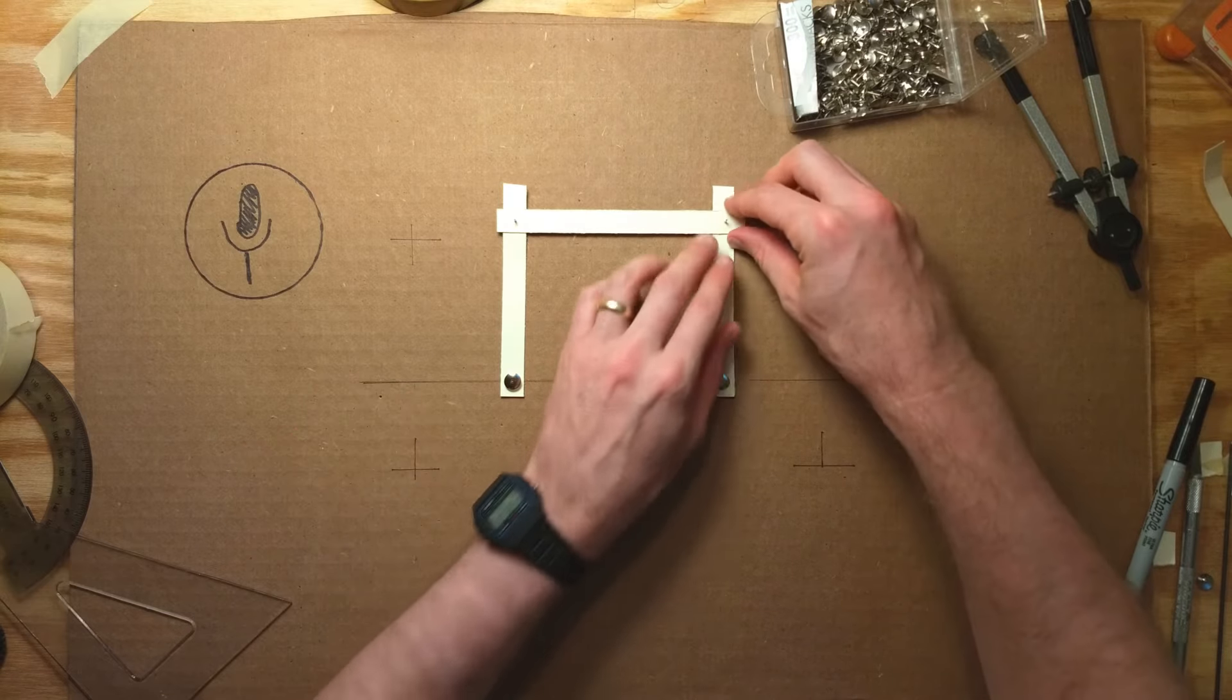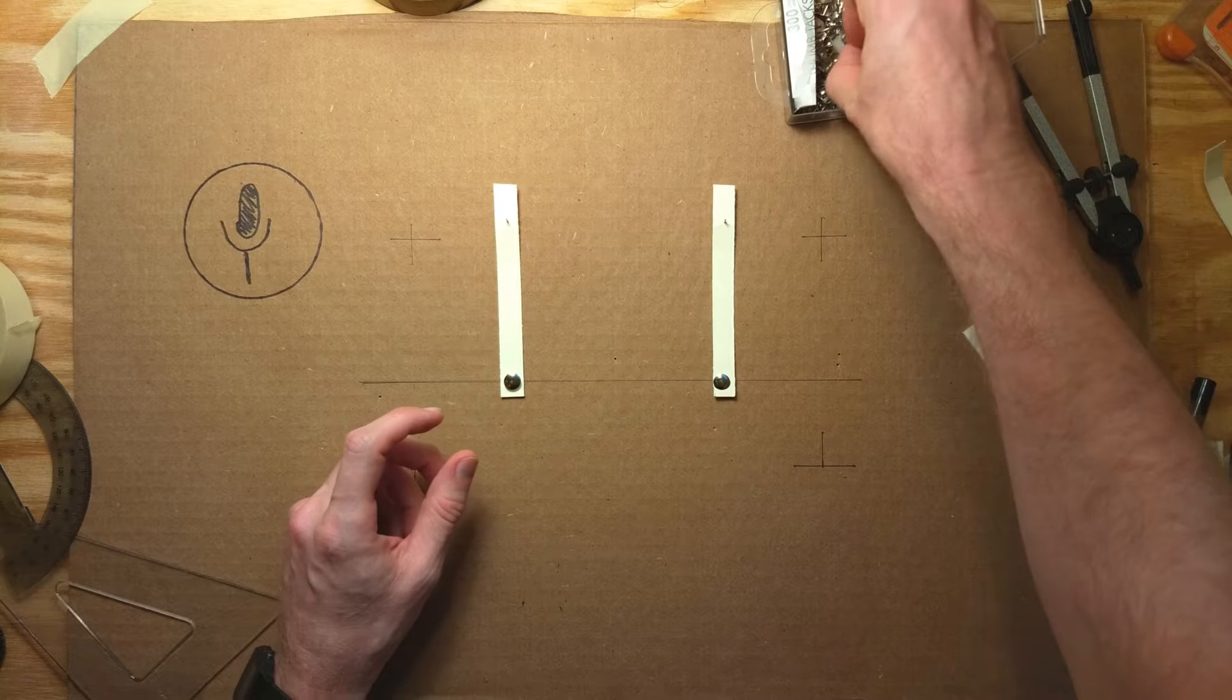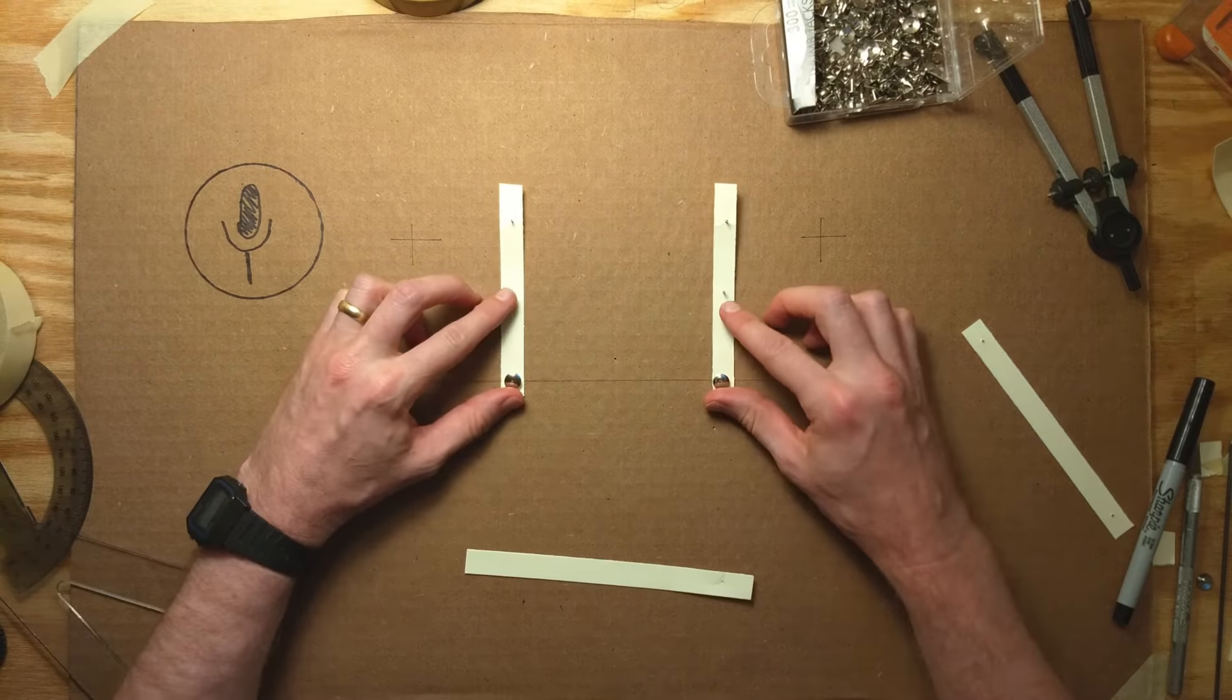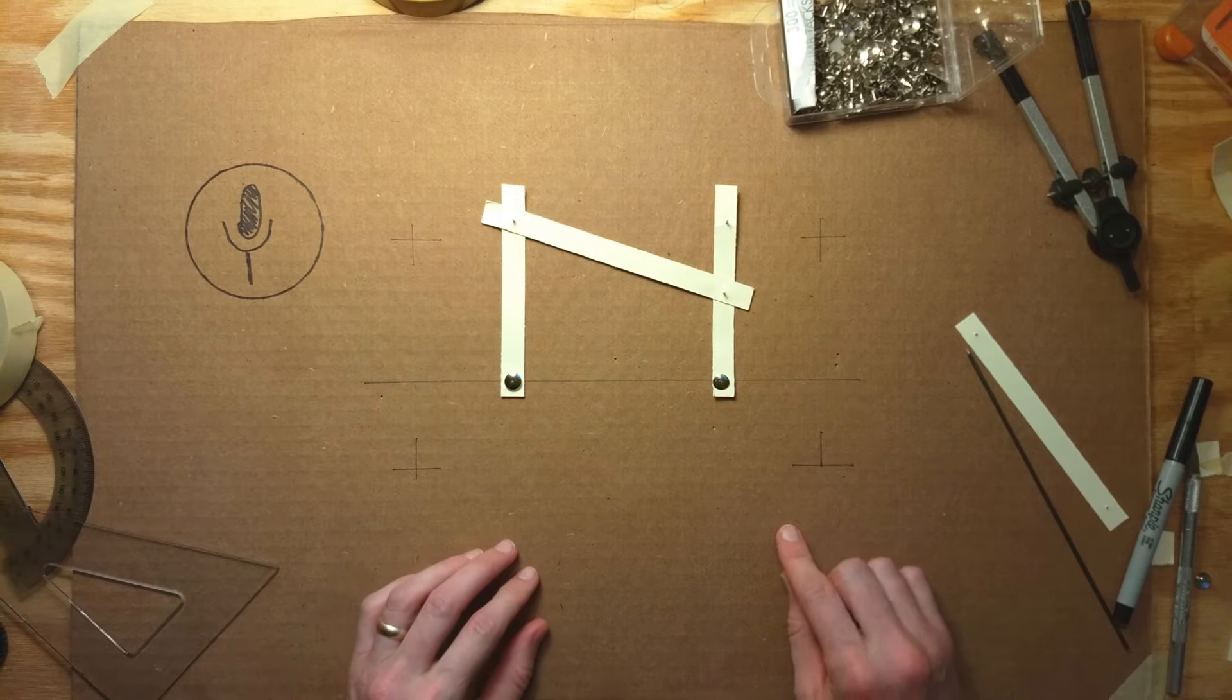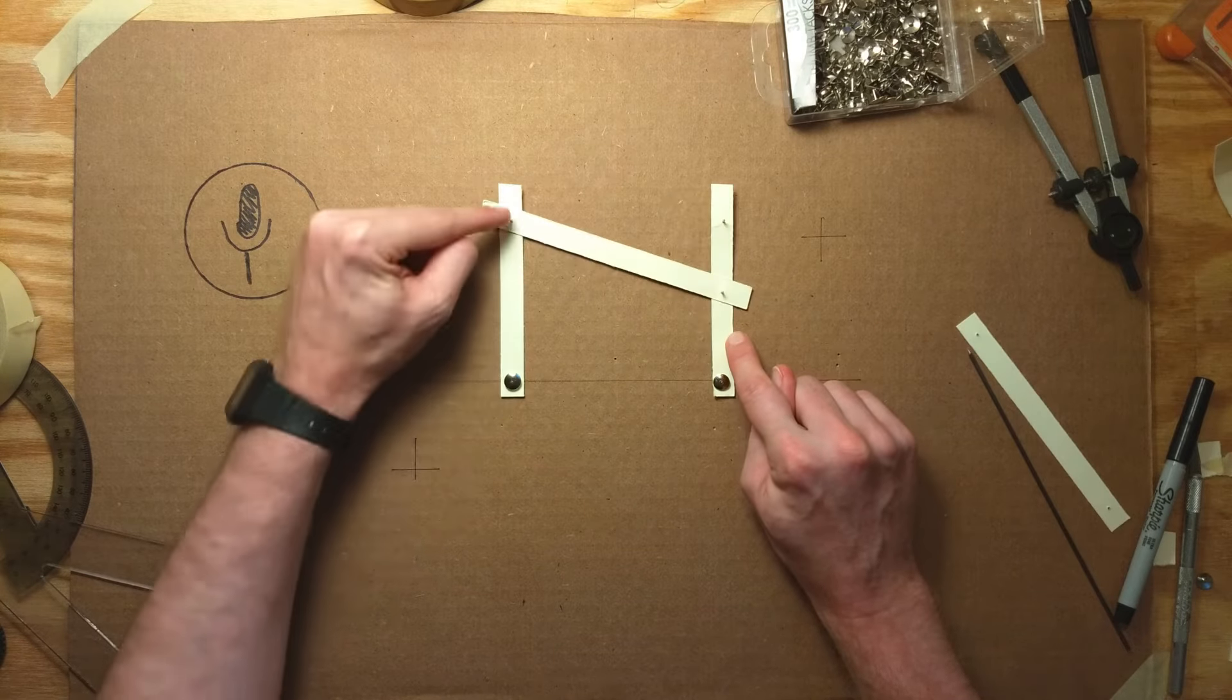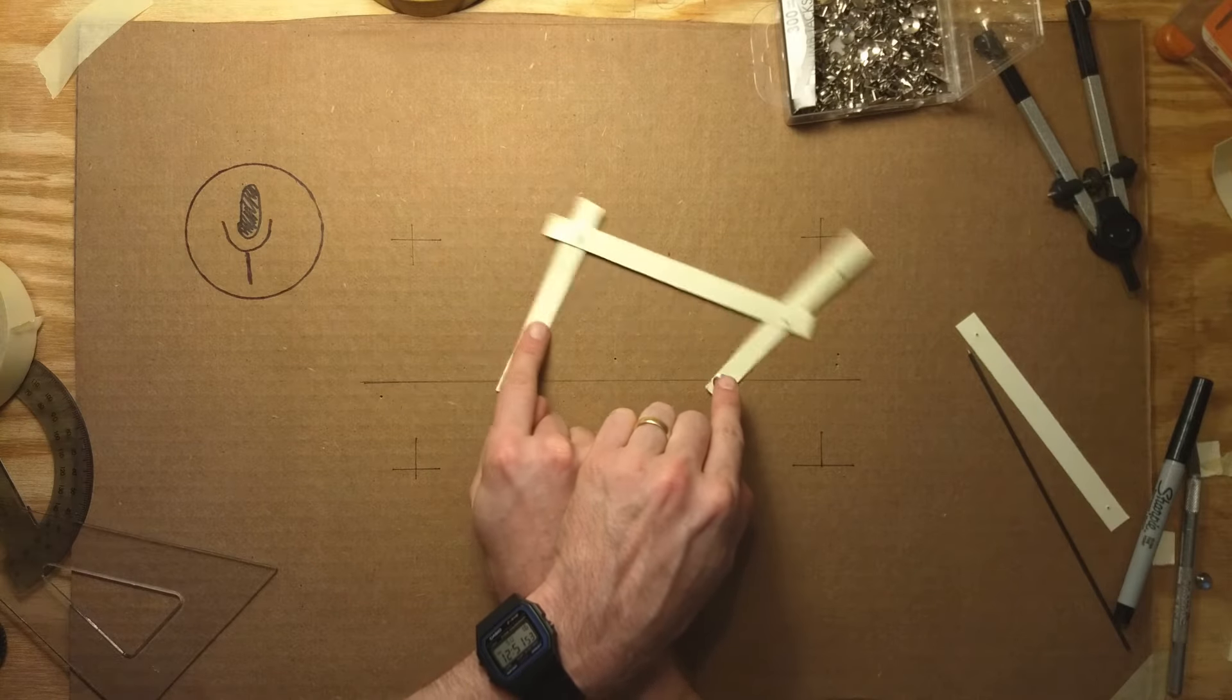Of course, you can gain mechanical advantage by changing this distance. Let's do it roughly by half on this side. Now when we move this lever, this side only moves half as much, because it's twice as far away from the pivot point. Alternately, if we move this one, this one moves twice as far.